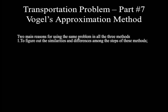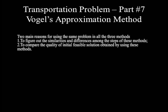In this video we are going to discuss Vogel's approximation method for setting initial feasible solution for the distribution of electricity from three power plants and one external network to three cities, for which initial feasible solutions were previously set by using the least-cost cell method and northwest corner cell method. The two main reasons for using the same problem in all three methods are: first, to figure out the differences and similarities between the steps, and second, to compare the quality of initial feasible solutions obtained by each method, measured in terms of minimizing transportation cost.